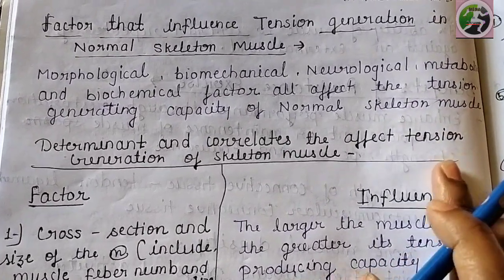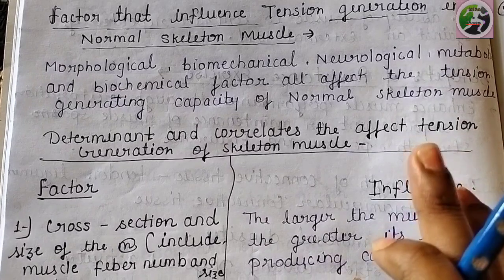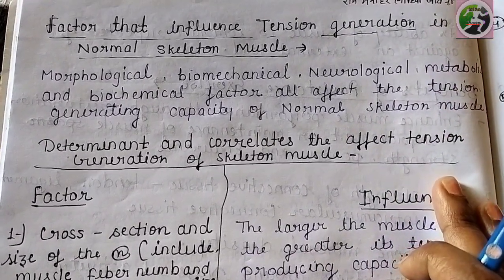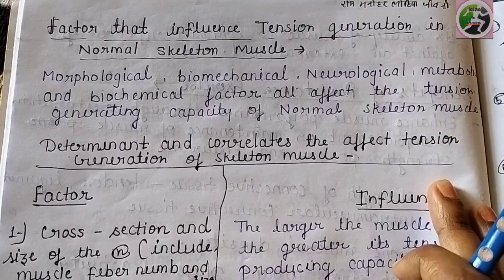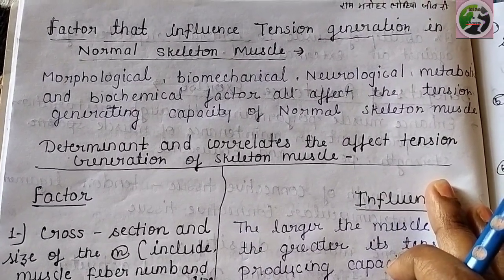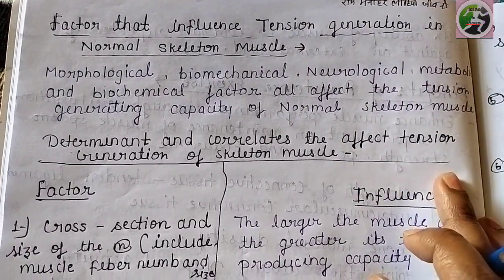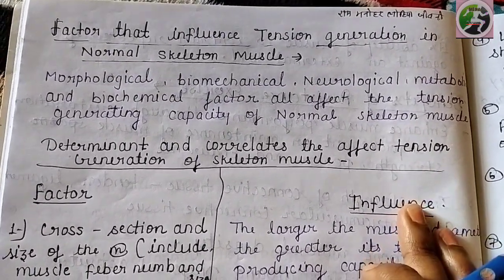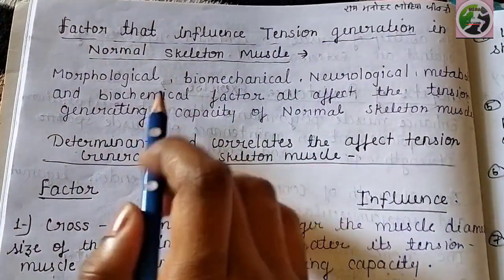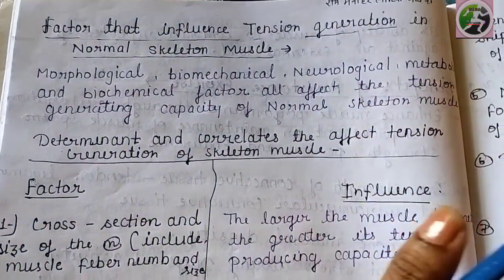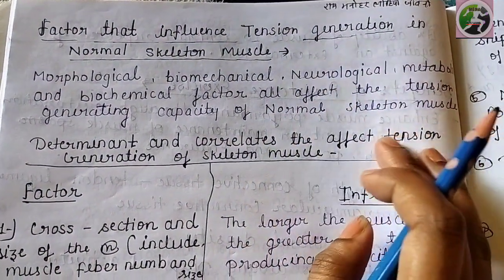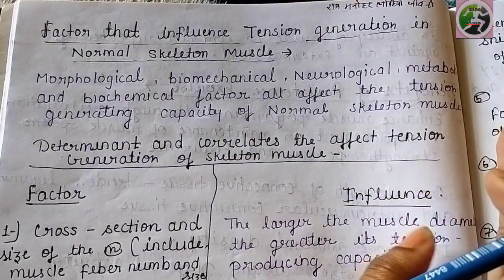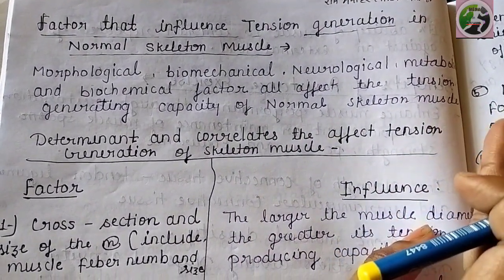We will learn about which factors develop our muscular performance — how our muscles increase performance and generate tension in our body. The main categories are morphological factors, biomechanical factors, neurochemical factors, and biochemical factors, which relate to the size of our skeletal muscles.